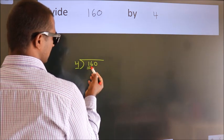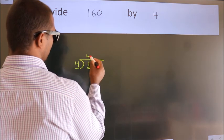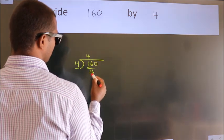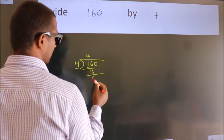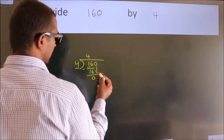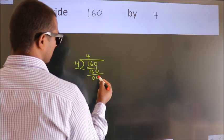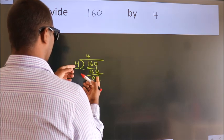16. When do we get 16 in the 4 table? 4 times 4 is 16. Now we subtract and get 0. After this, bring down the next number, so 0 down. When do we get 0 in the 4 table?